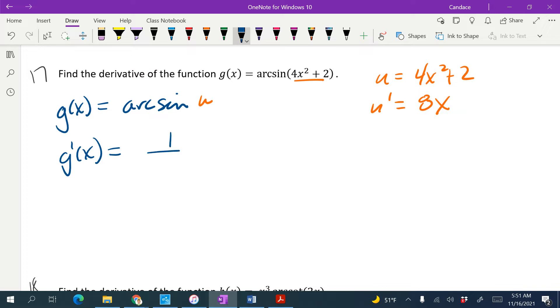I know the derivative of arc sine is 1 over the square root of 1 plus u squared, whatever is inside of there squared. And then we've got to take the times the derivative of the inside function, which is 8x.